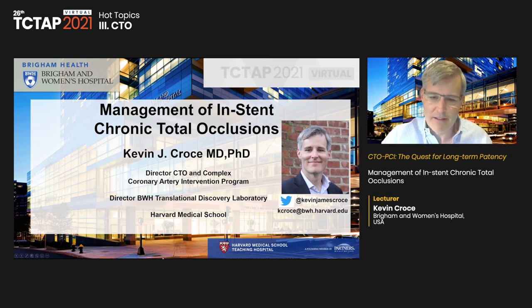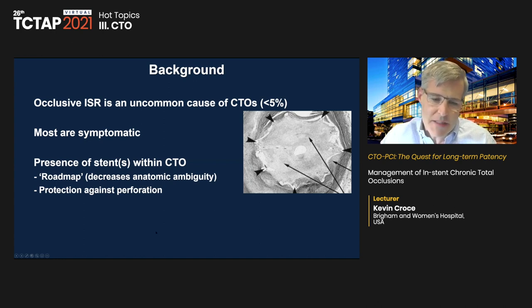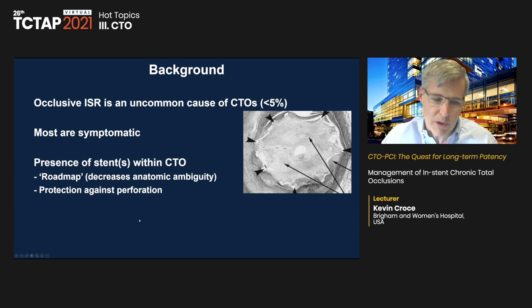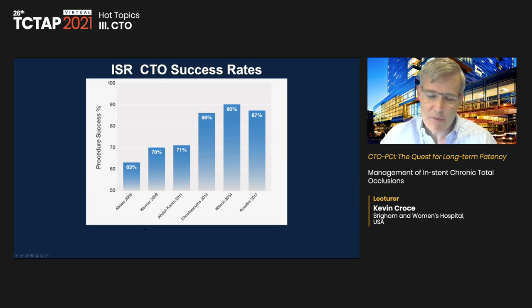In-stent restenosis is a fairly uncommon cause of CTOs. Most patients are symptomatic. Interestingly, the presence of a stent within the CTO segment can be helpful because the stent acts as a road map, decreasing angiographic ambiguity. It allows you to see where you're going and can protect against perforation, since you know where the stent was placed. ISR CTO success rates have grown to 85–90%, mirroring contemporary non-ISR CTO success rates.